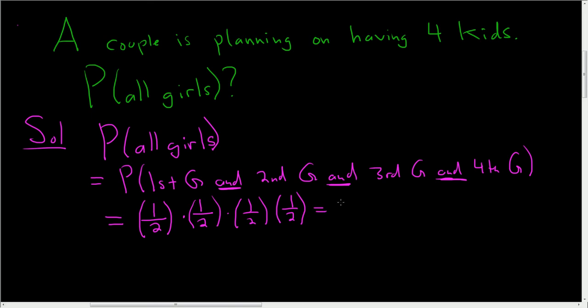So you end up with 1 over 2 to the fourth, and 2 to the fourth is 16, so one over 16. So the probability, if you're planning on having four kids, the probability that they're all girls is one over 16.